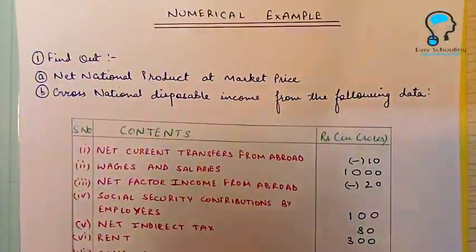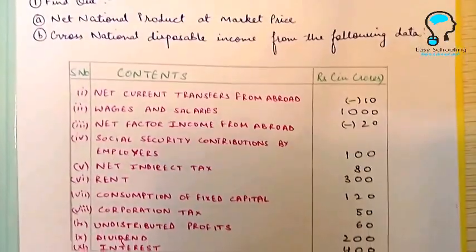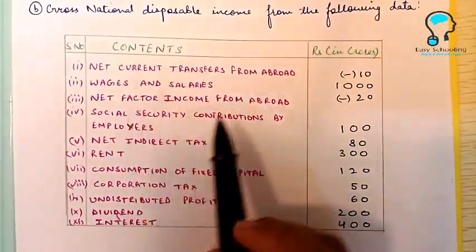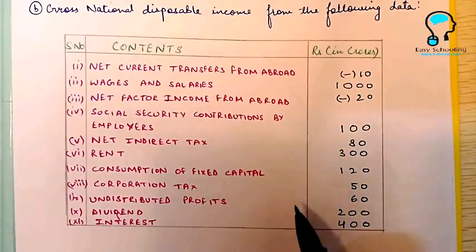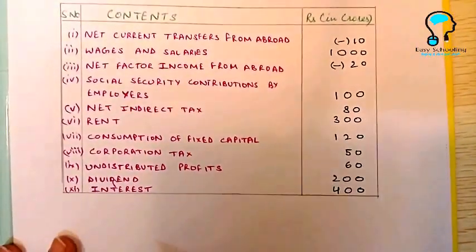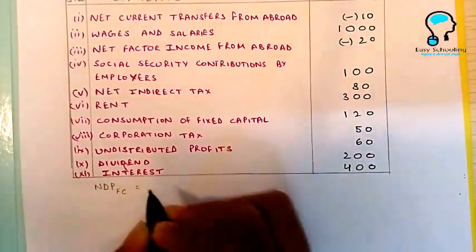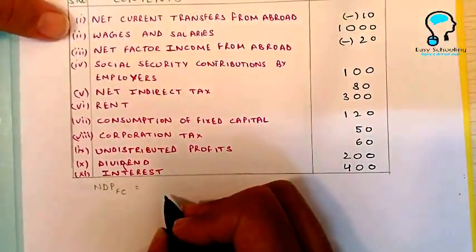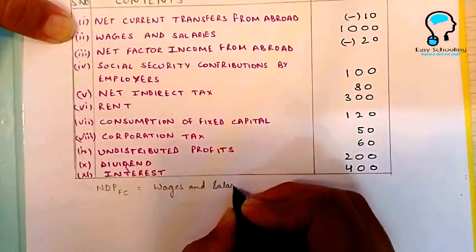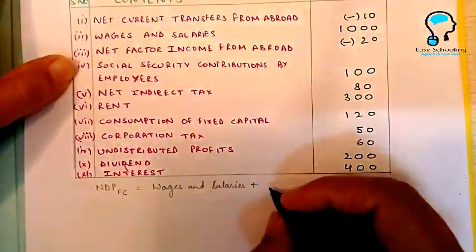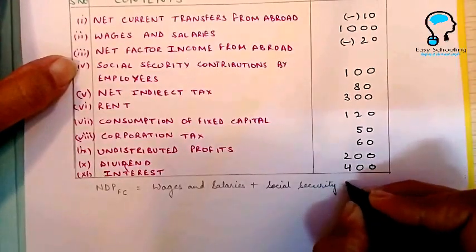Now we will solve a numerical example to calculate national disposable income from the given data. Since we have wages and salaries, social security contributions, rent, interest, and profit, we will use the income method. First, we calculate NDP FC, adding wages and salaries plus social security contributions.